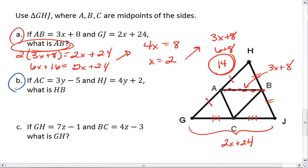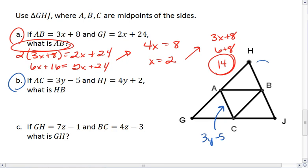Okay, part B. If AC is 3Y minus 5, and we're told that HJ is 4Y plus 2, notice this is a mid-segment, and its third side. And we want to find HB.